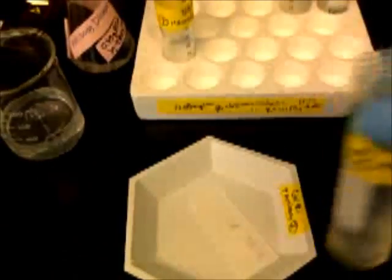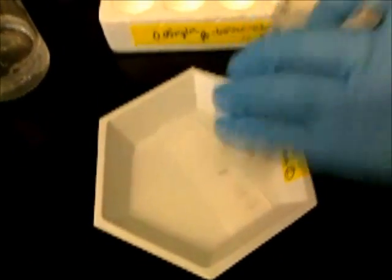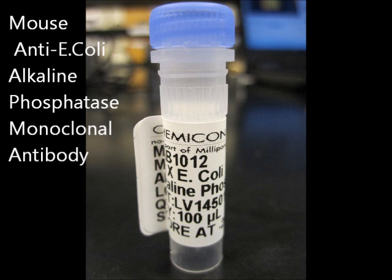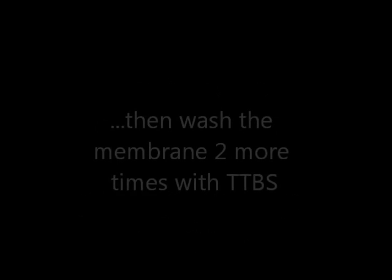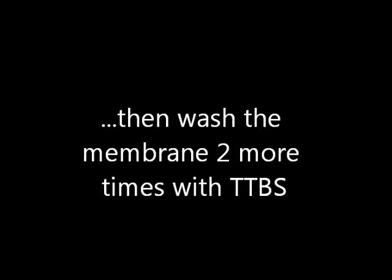After the two TTBS washes, pour the TTBS off of the membrane and pour the diluted primary antibody onto the membrane. The dilute antibody is a 1 to 20,000 dilution of a stock mouse anti-e-coli alkaline phosphatase monoclonal antibody. Incubate the membrane for one hour in the primary antibody solution. Then wash two more times with TTBS.